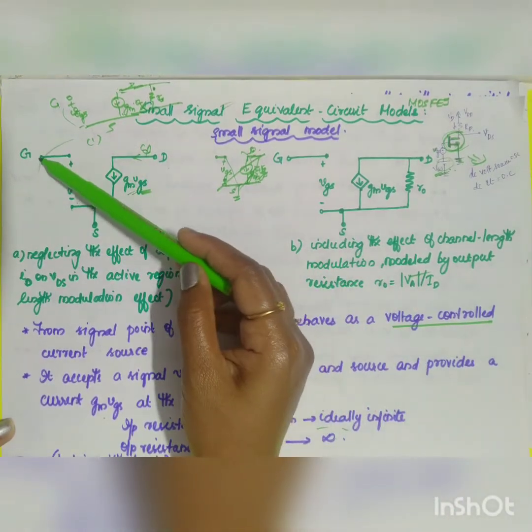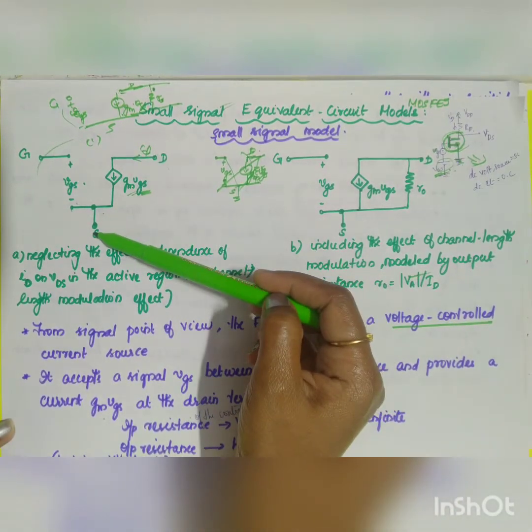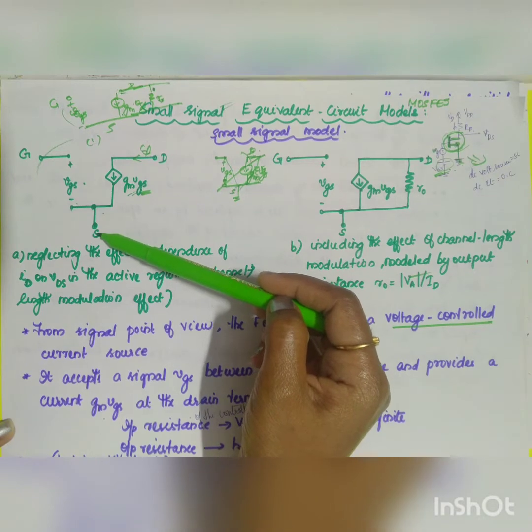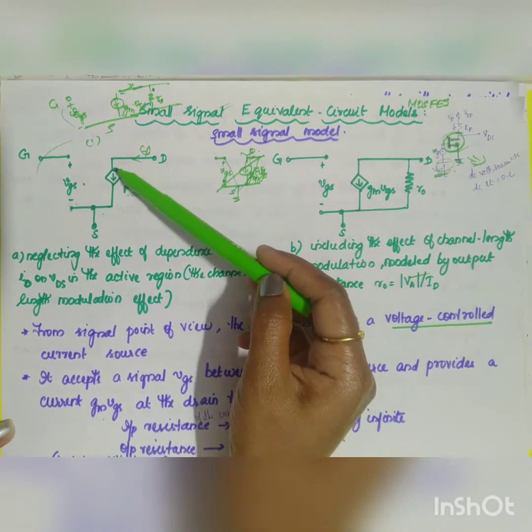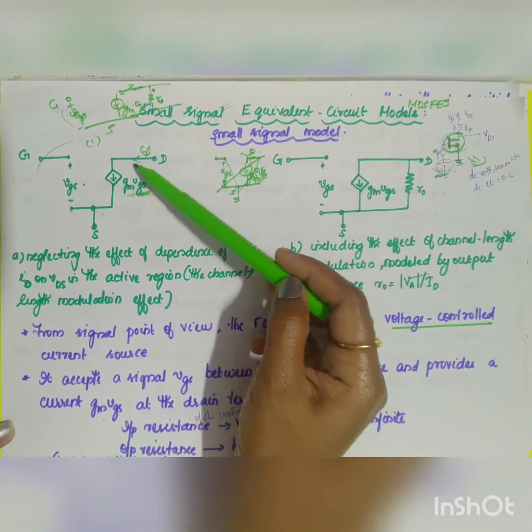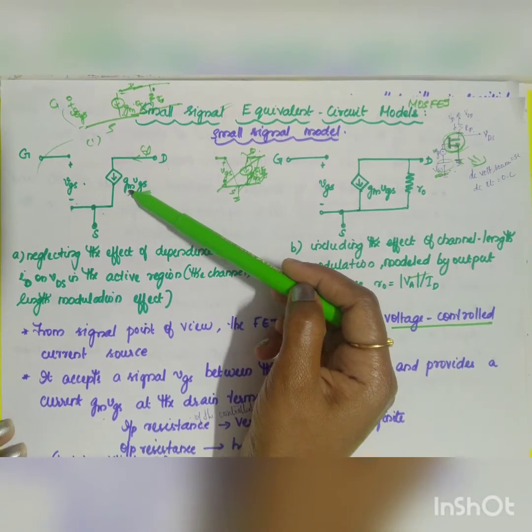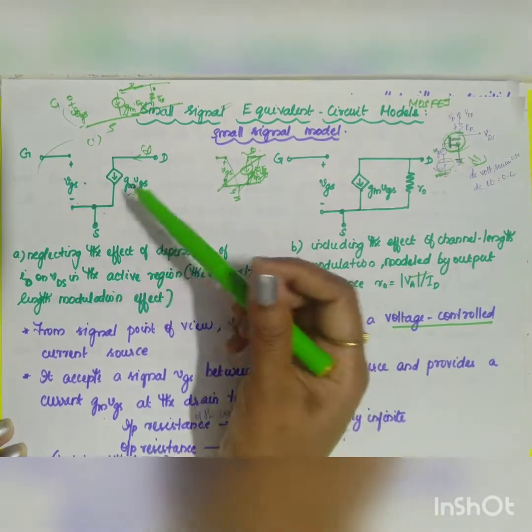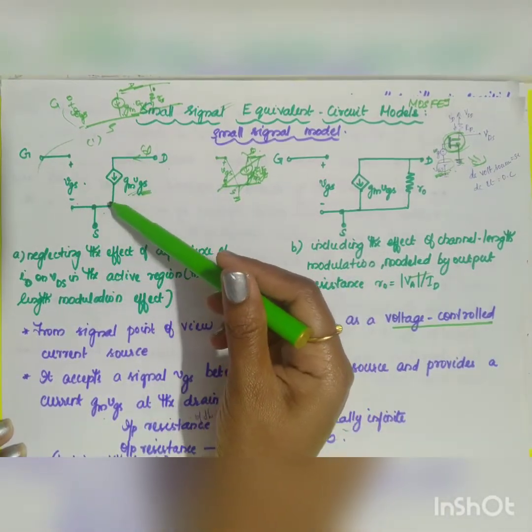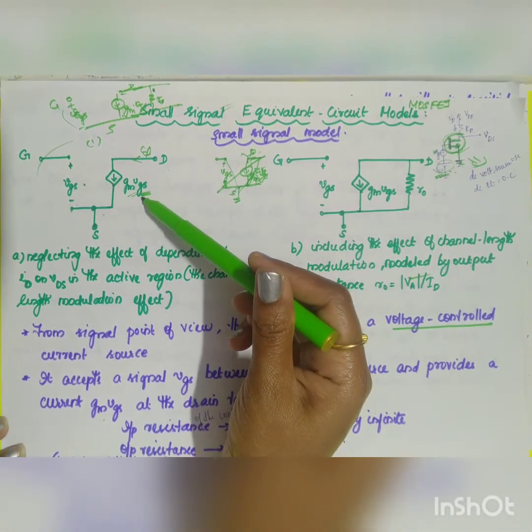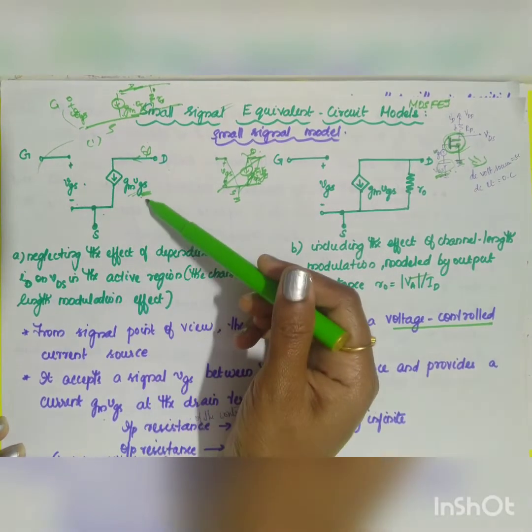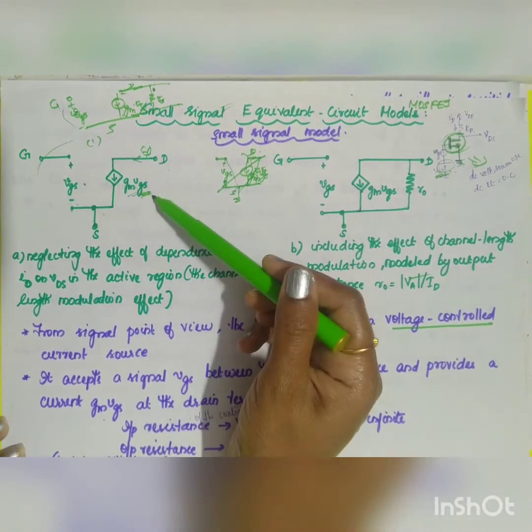In your first diagram, input is gate, output is your drain, your common is your source which will be converted into your output current ID flowing. It will be converted into your current source that is equal to GM into VGS.